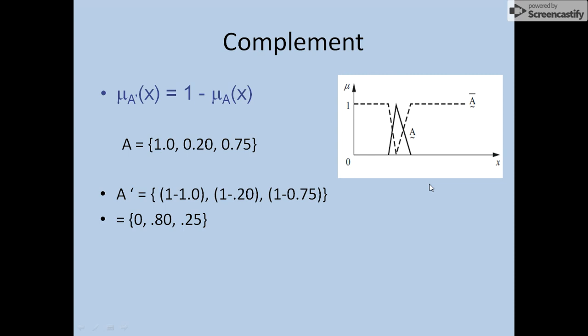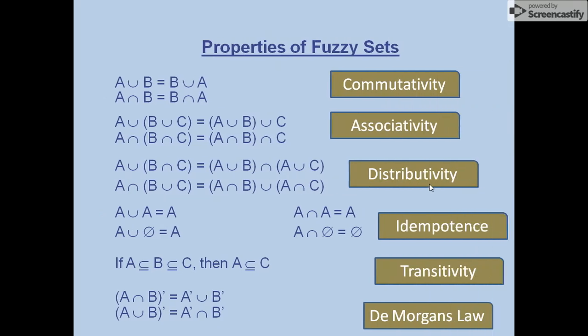There are some specific properties that fuzzy sets contain, similar to crisp sets. The first is commutativity: if we have two sets A and B and apply the union operation, we get the same result as applying union between B and A. The same holds for intersection. For associativity: A union (B union C) equals (A union B) union C — the grouping order does not affect the result, and the same applies to intersection.